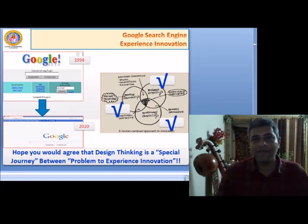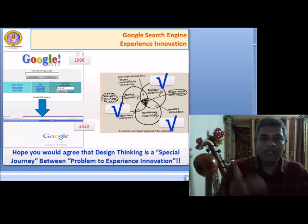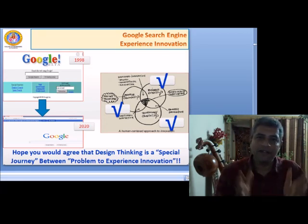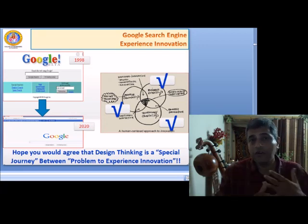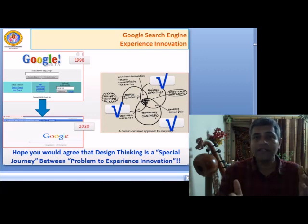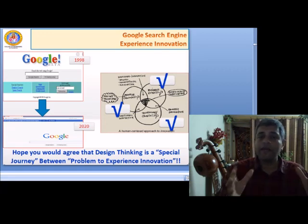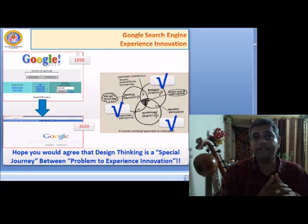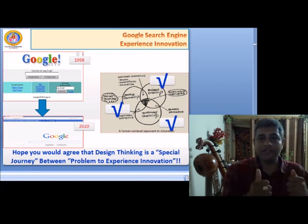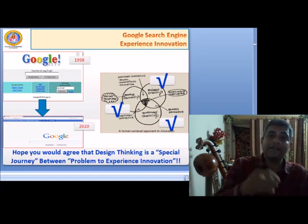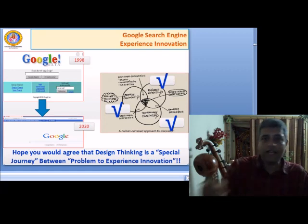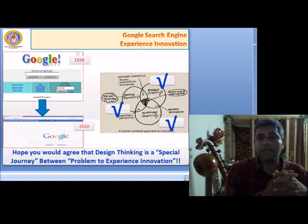Now look at another great example: Dr. Google. More than a physical doctor, this doctor is bringing a lot of solutions to all our problems. Google search engine, if you look at it as the innovation, qualifies under all parameters. First, business viability: many can afford Google search — most of the time it is free. From a technology perspective, it is considered one of the best innovations of the century. From a desirability perspective, everyone uses it for different purposes. Looking at Google search engine from the 1998 version to the current version, it has connected all the dots step by step and today can reasonably be considered one of the best experience innovations.